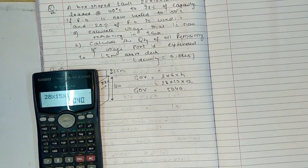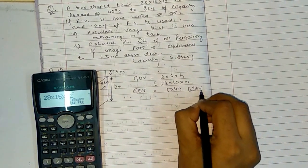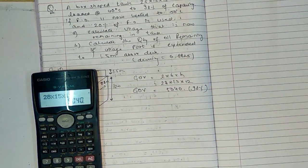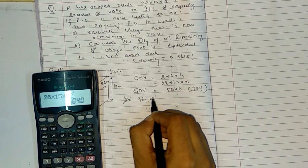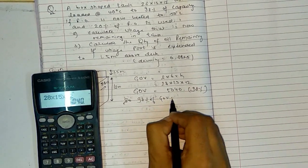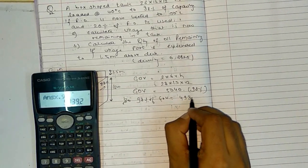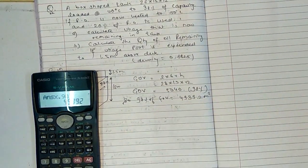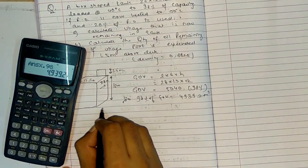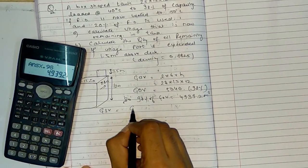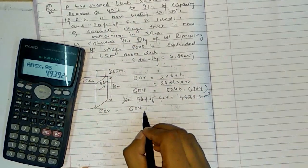Total tank volume GOV is 28 × 15 × 12 = 5040 cubic meters. It is loaded up to 98%, so 98% of GOV equals 4939.2 cubic meters. Next, we need to find GSV. GOV when loaded at 40 degrees Celsius multiplied by VCF at 40 degrees.